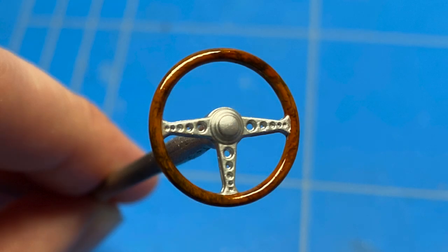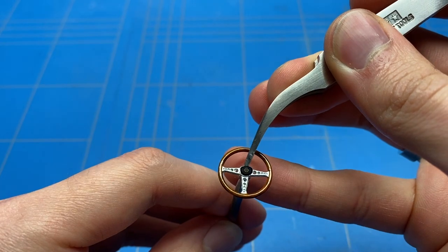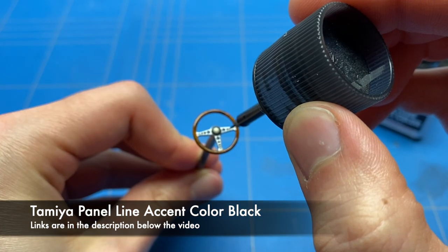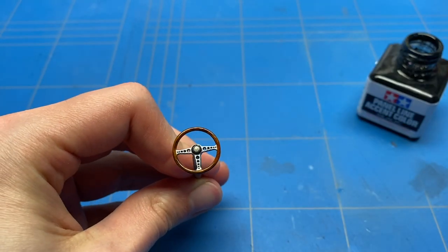To finish off the steering wheel, there was a decal that needed to be applied into the center that is probably for the horn and also has a nice logo on it. I also added some panel line accent color to all of the smaller cutouts in the rest of the steering wheel.